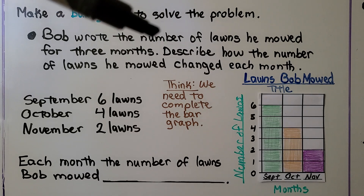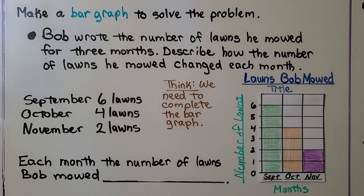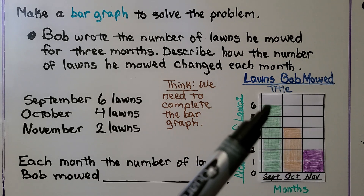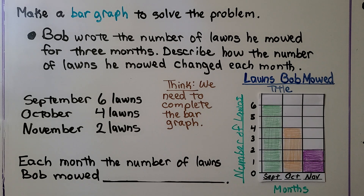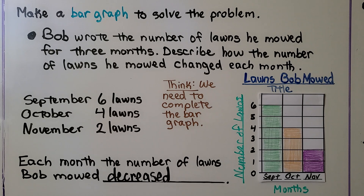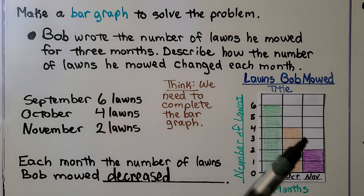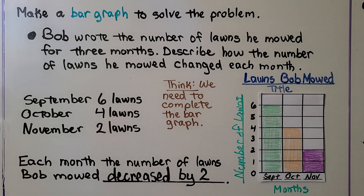Now we can answer: describe how the number of lawns he mowed changed each month. We can look at the bars and see they're going down — they're decreasing. Each month, the number of lawns Bob mowed decreased. And how did they change? They decreased by 2. October is 2 more than November — they decreased by 2 each month.